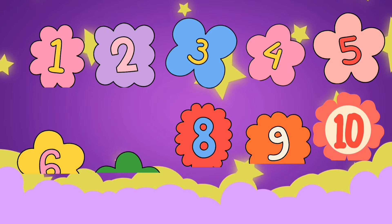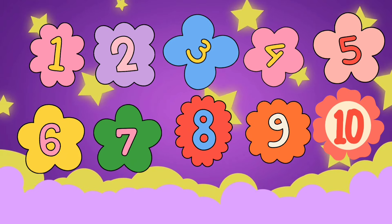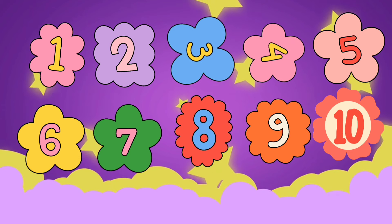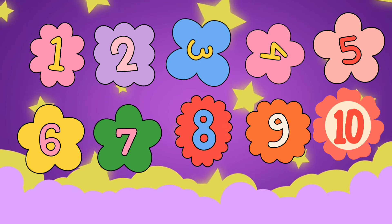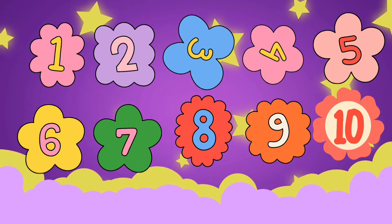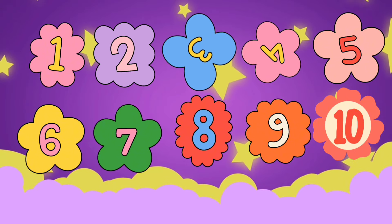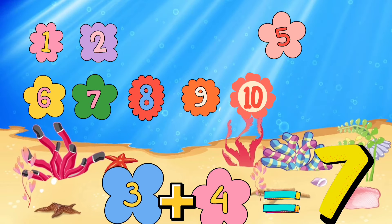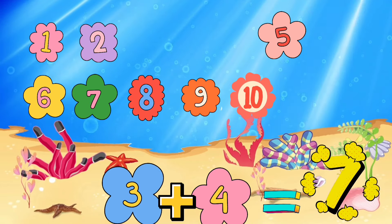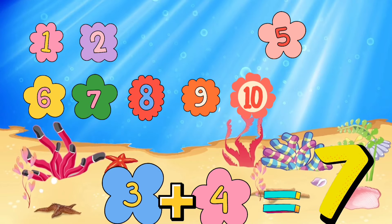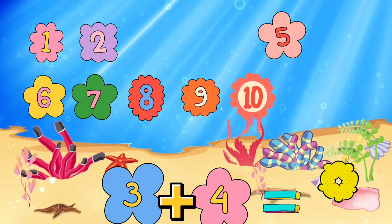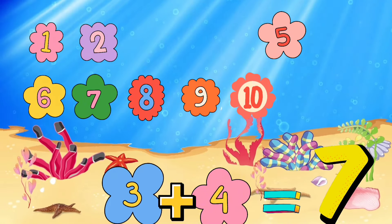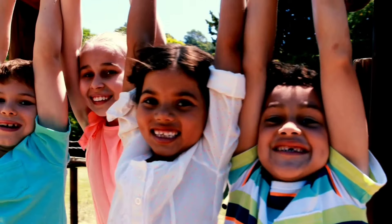Let's add four and three using our number line. Start at four and jump three spaces. Where do we land? Do you have any idea? Awesome — yes, we land on seven! So four plus three equals seven. Great job, everyone!